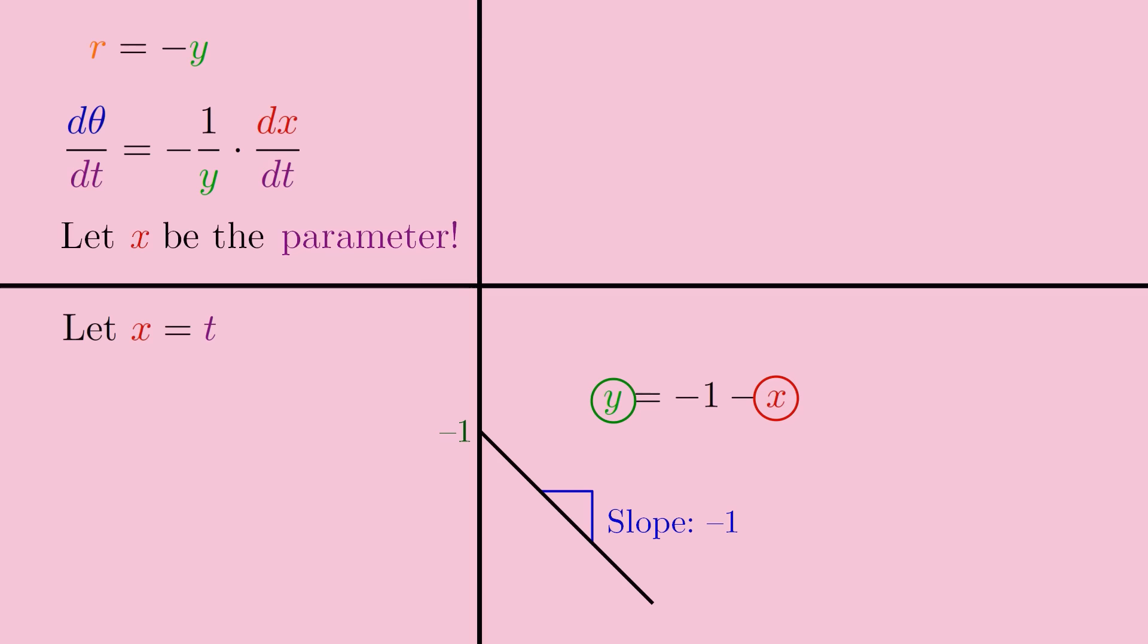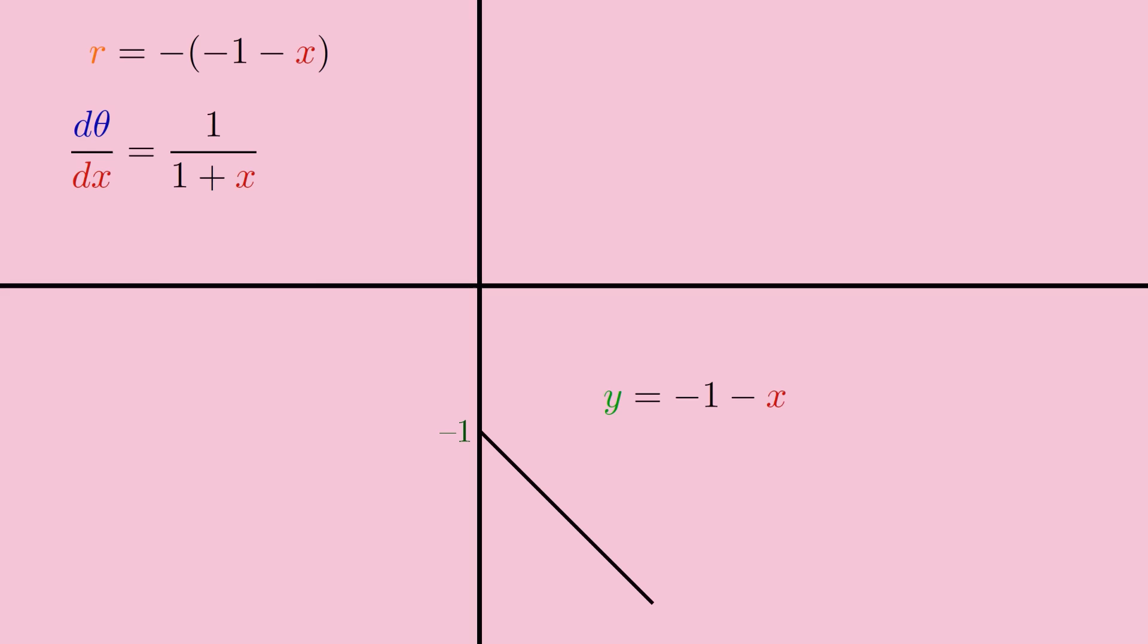This simplifies our second road wheel equation to being just the derivative of theta equal to negative 1 over y, because the derivative of x with respect to itself is just 1. Now, since we have that y equals negative 1 minus x, we can rewrite negative 1 over y as negative 1 over negative 1 minus x, or just 1 over 1 plus x, and we can similarly rewrite the first equation as r equals negative the quantity negative 1 minus x, or just 1 plus x.